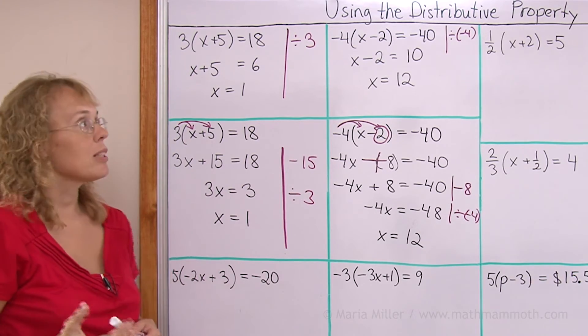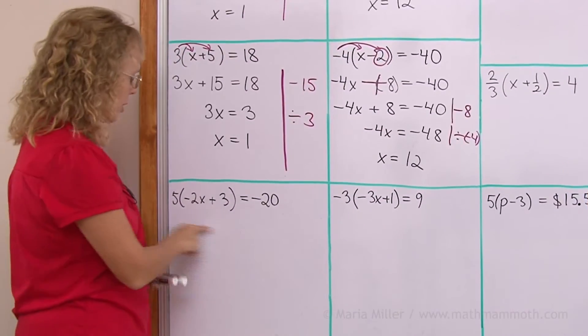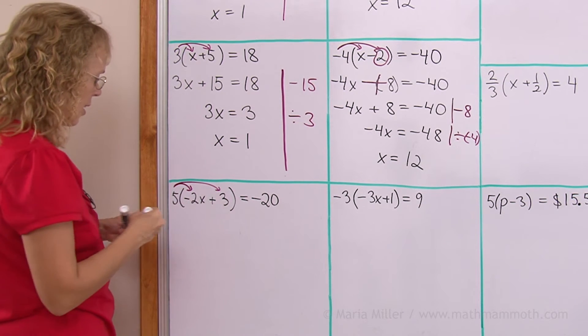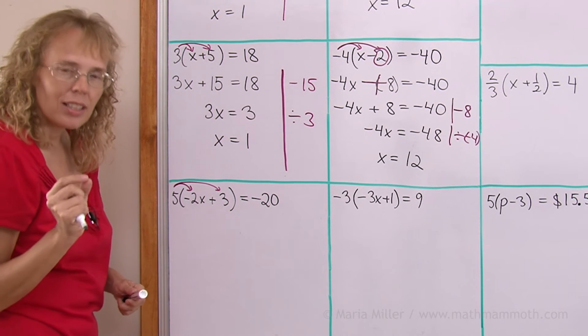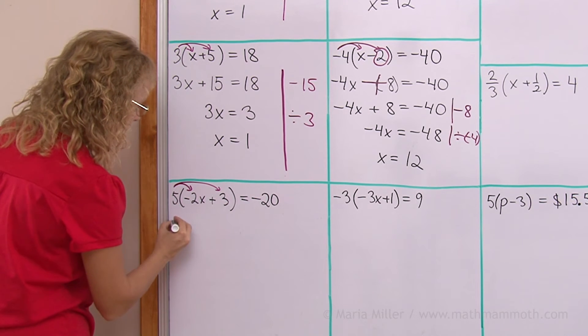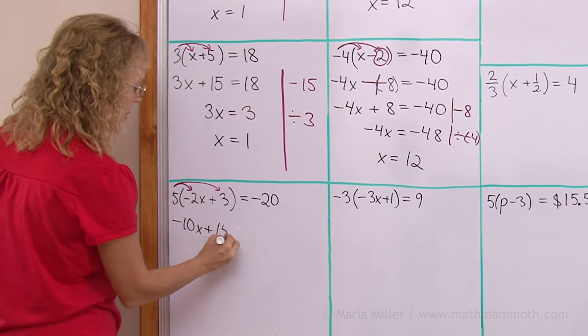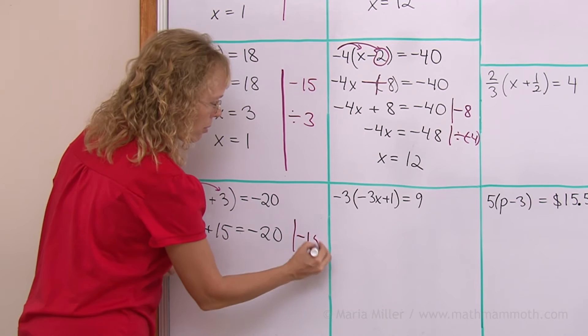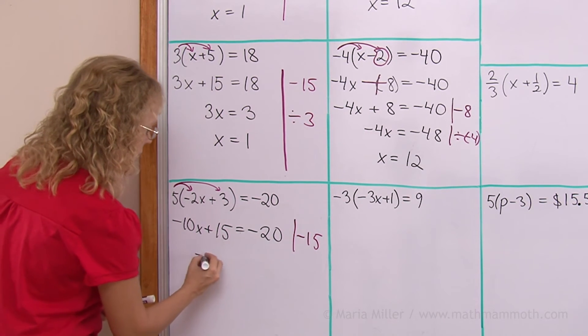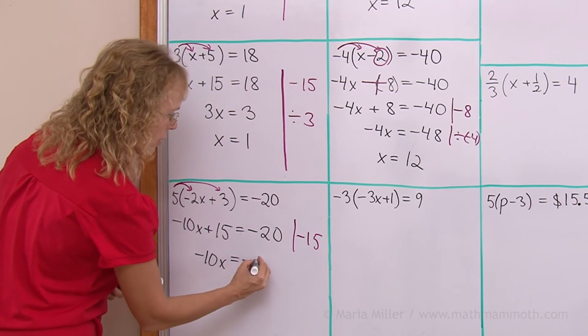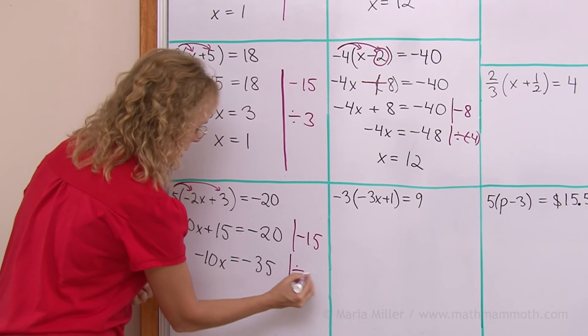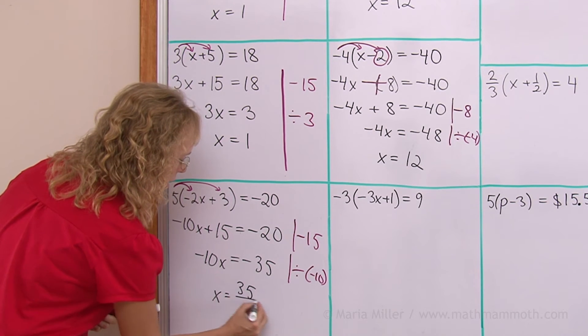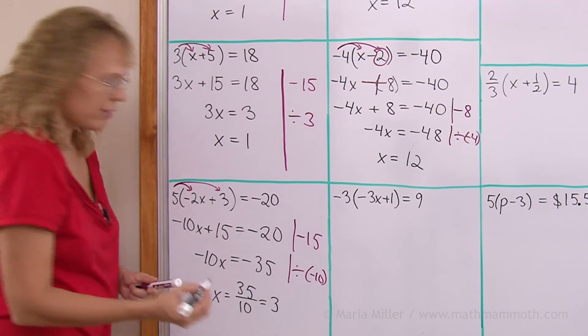But we will definitely need to use the distributive property in certain equations as well. Now let's try this one. If I use the distributive property here, I will get 5 times that and 5 times that. So there will be 5 times negative 2x. 5 times negative 2 is negative 10. And then x. 5 times 3. And then here negative 20. Now I will get rid of the 15 by subtracting 15 from both sides. So we get negative 10x. Then over here negative 35. And lastly just divide by negative 10. So x is now alone. And we get 35 divided by 10. Which is 3 and 5 tenths. 3 and a half.